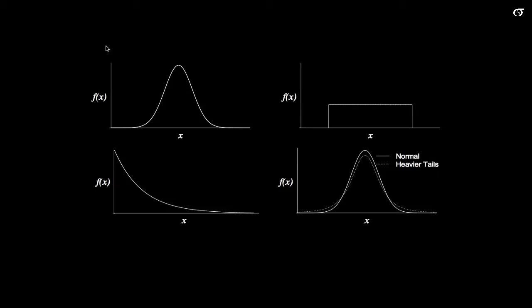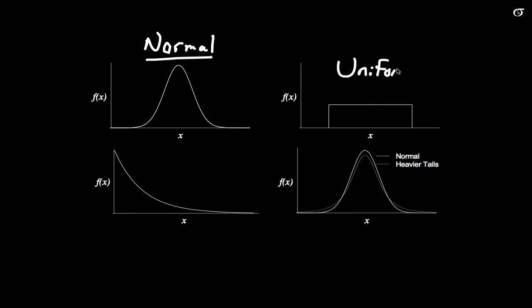Suppose we have these four distributions. This one over here is simply a normal distribution, so if we're sampling from this distribution, the normality assumption is perfectly justified and the procedures will work perfectly. But let's look at three different violations: over here we have a uniform distribution, over here we have an exponential distribution which has some skewness to it, and over here we have a distribution that looks quite a bit like the normal but has heavier tails. We're going to investigate this through simulation.